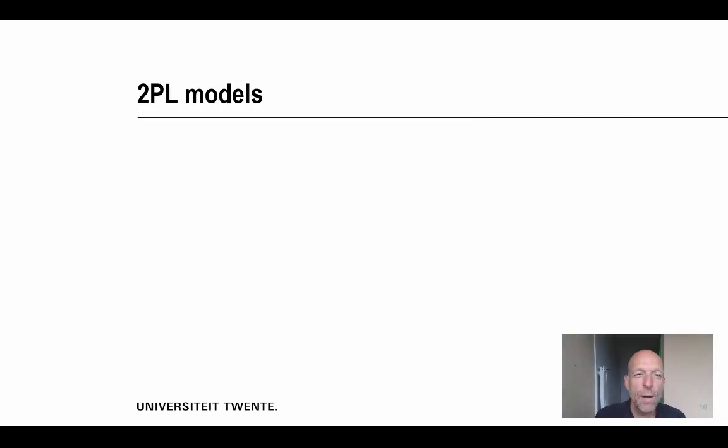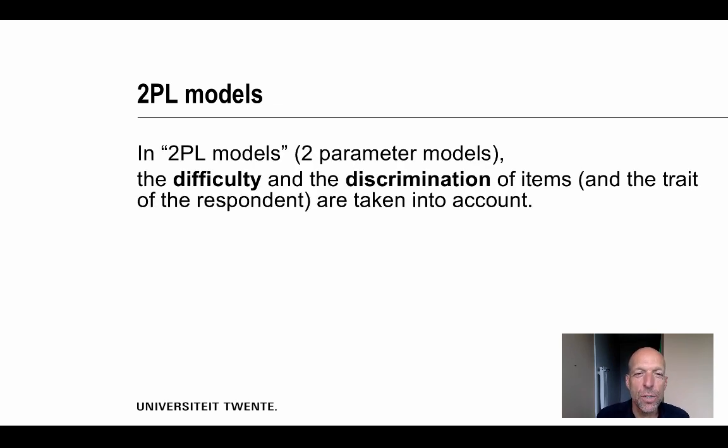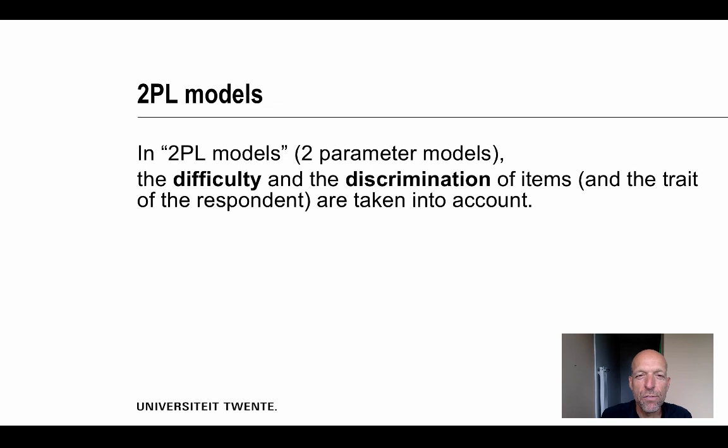In two parameter models, both the discrimination and the difficulty are included. So that's why they're called two parameter models. And of course, you not only measure the difficulty and the discrimination of the items. You do not only include these elements in the model, but also the trait of the respondent.